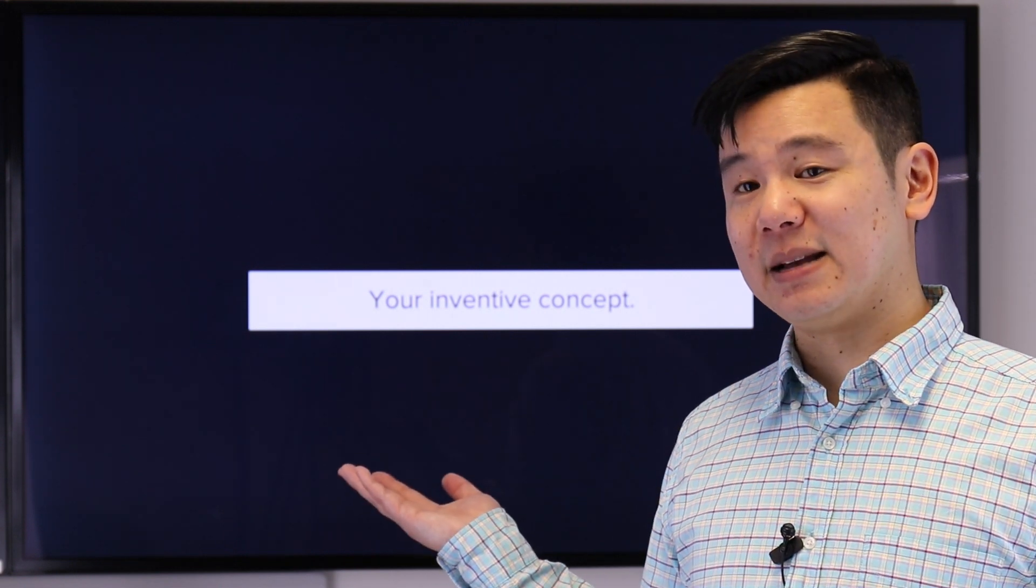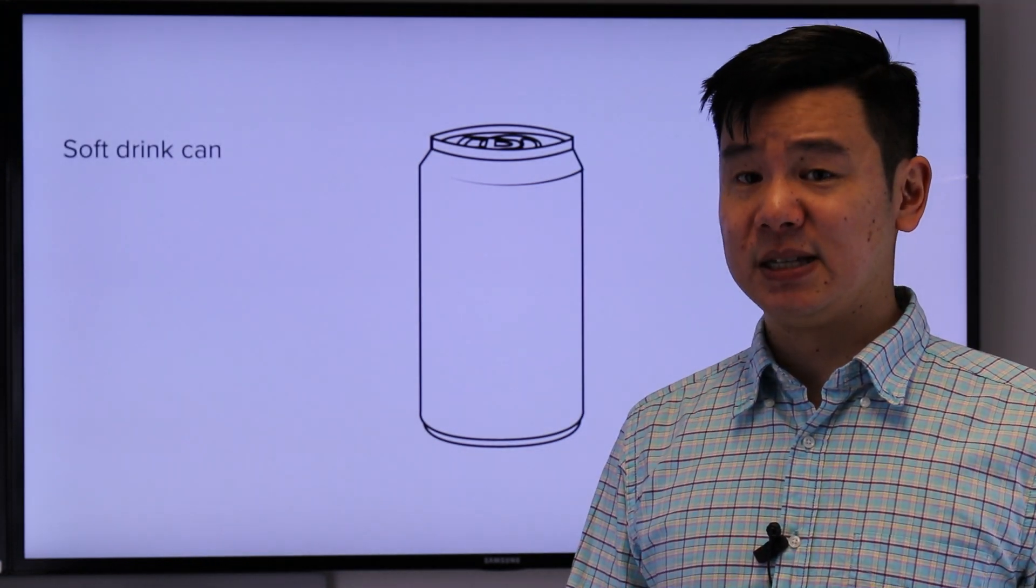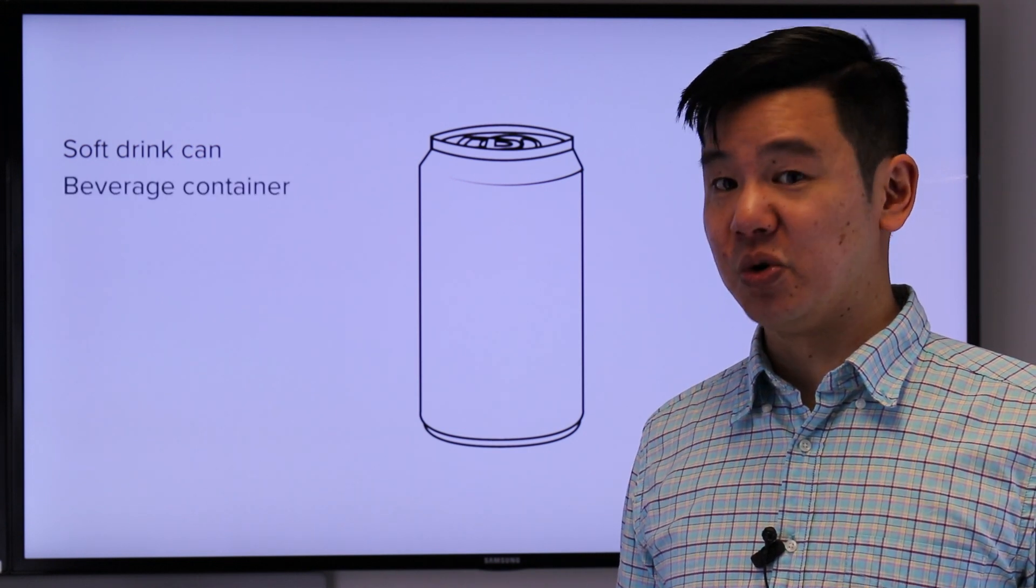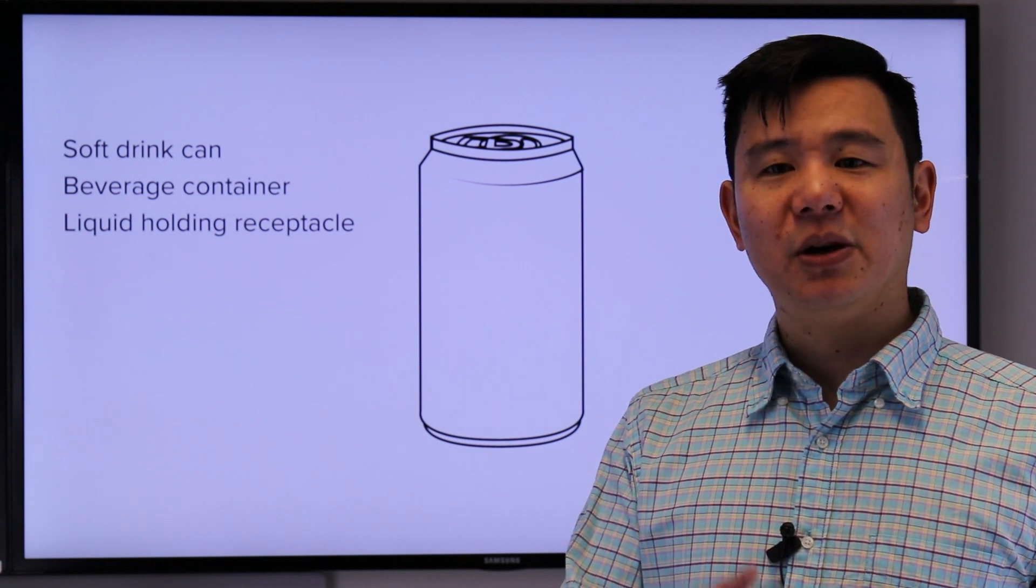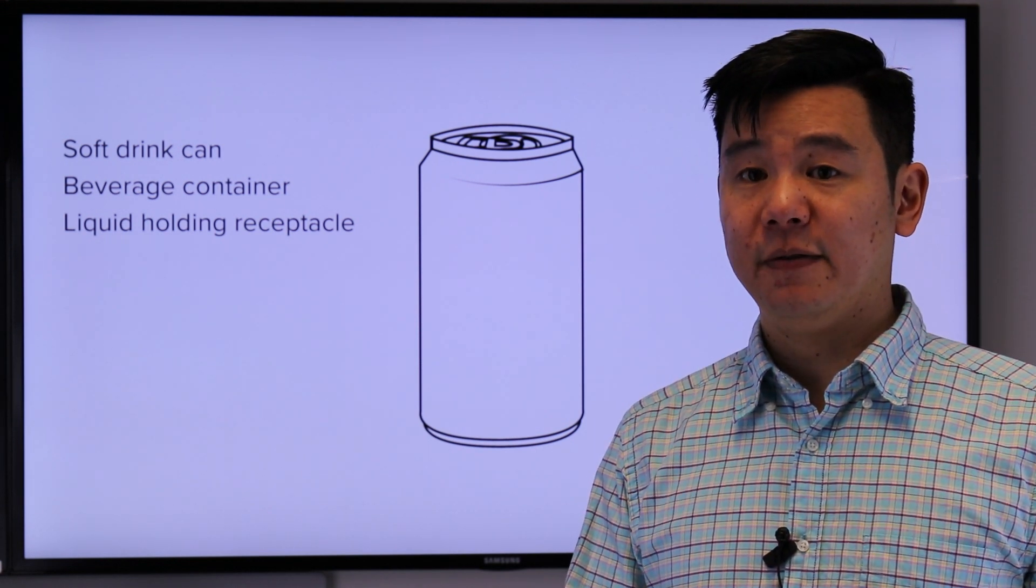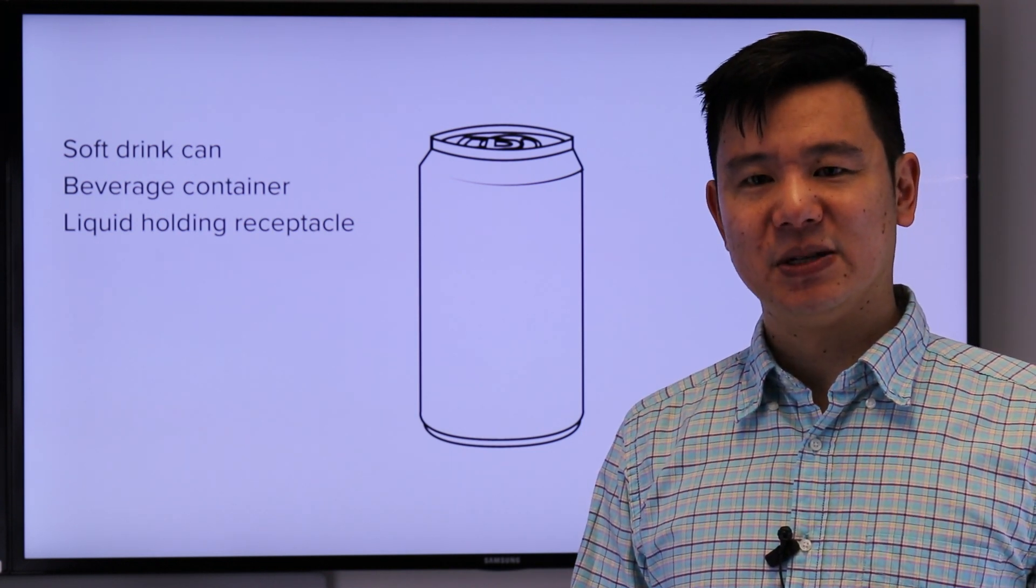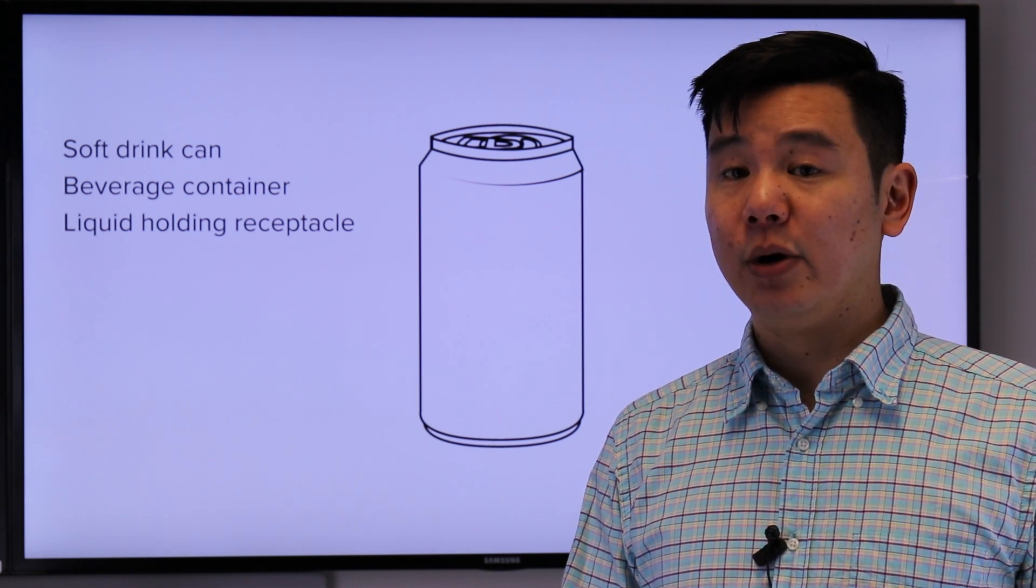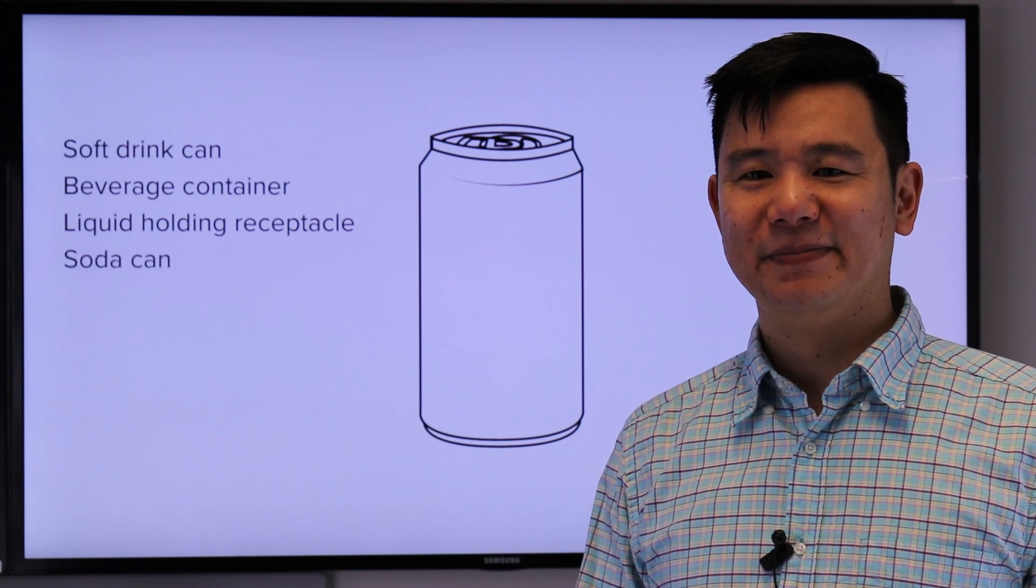Make a list of different ways your invention can be described. Take this example. This could be a soft drink can, but there are many other ways I could describe the same product. It could also be a beverage container or a liquid-holding receptacle. Because there is no guarantee that other people have used the same words that you have, the more alternatives that you can come up with, the better chance of finding relevant results. Remember to think about other cultures too, like how Americans might call soft drink soda.